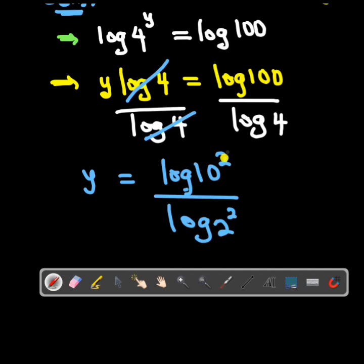And then I can actually do the same thing I did here by bringing the 2 that I have as powers down, and that will give me 2 log 10 over 2 log 2.